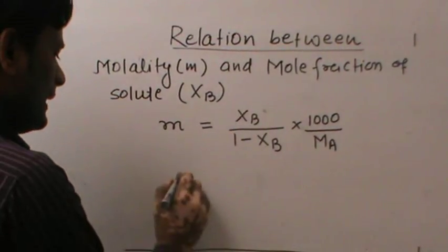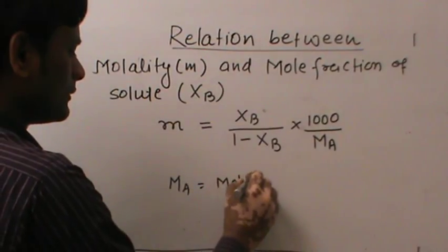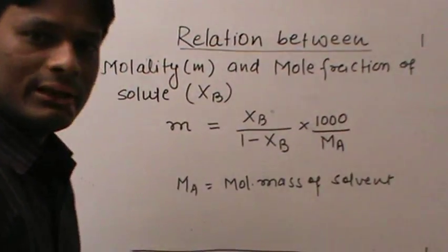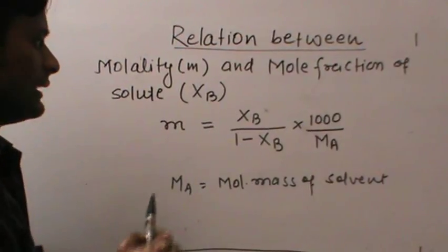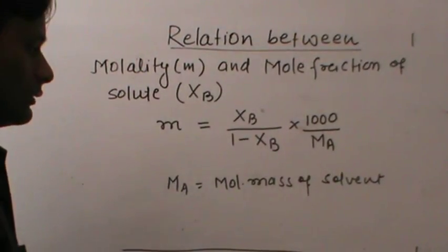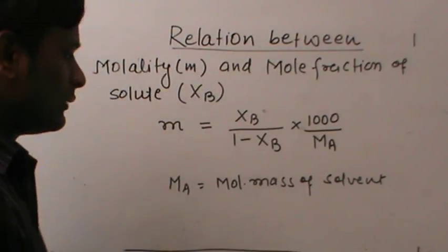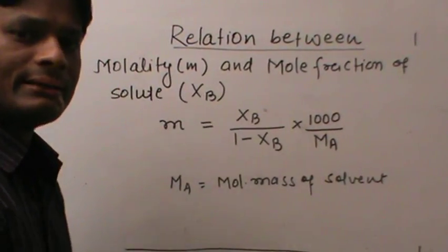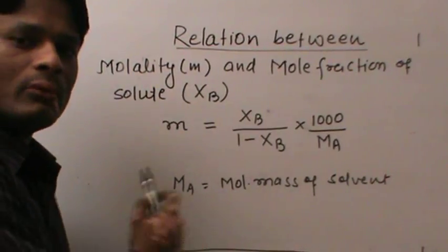Here MA is the molecular mass of the solvent. This relation gives the molality when the mole fraction of solute is known. When molality is to be calculated and mole fraction is given in questions, we can use this equation.